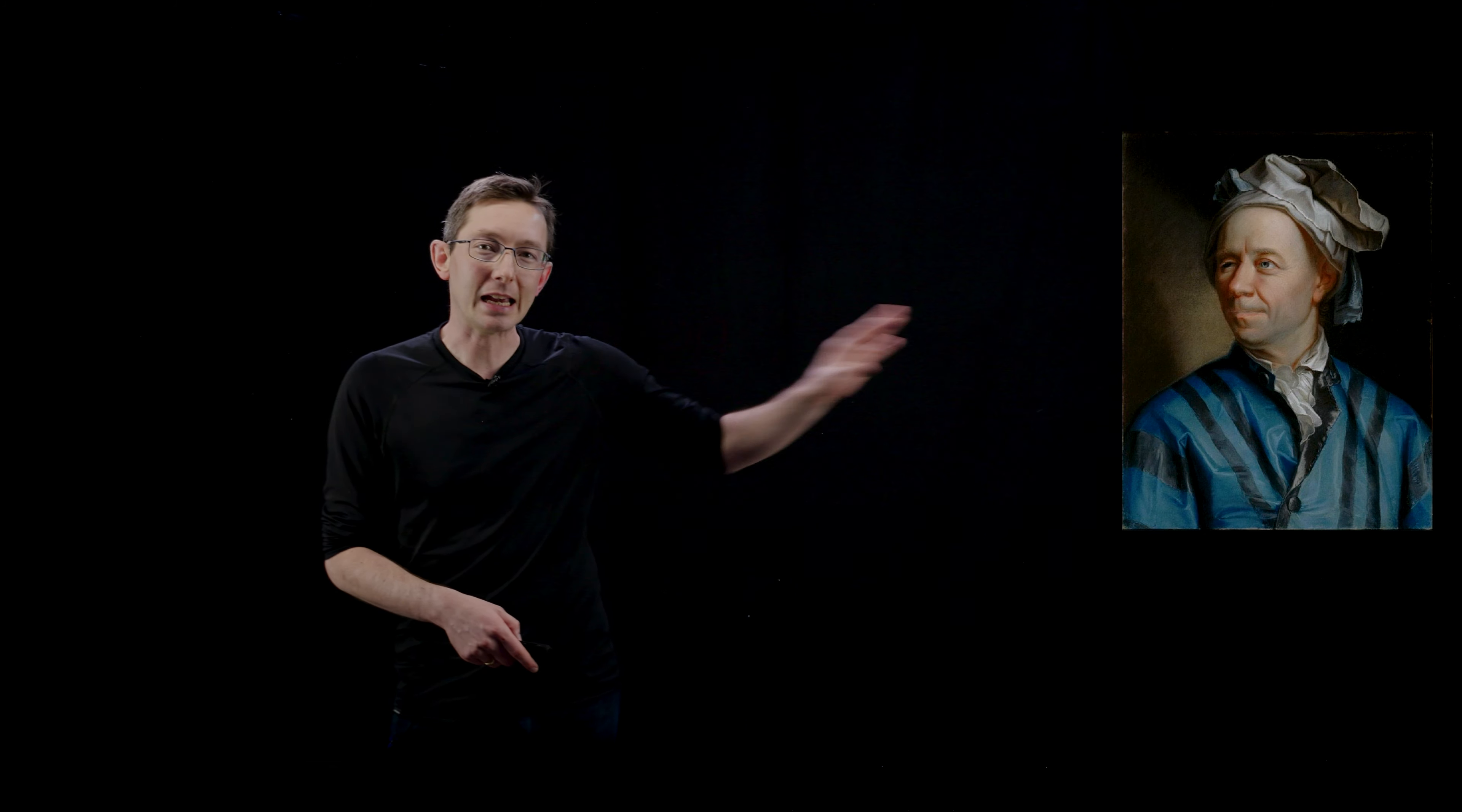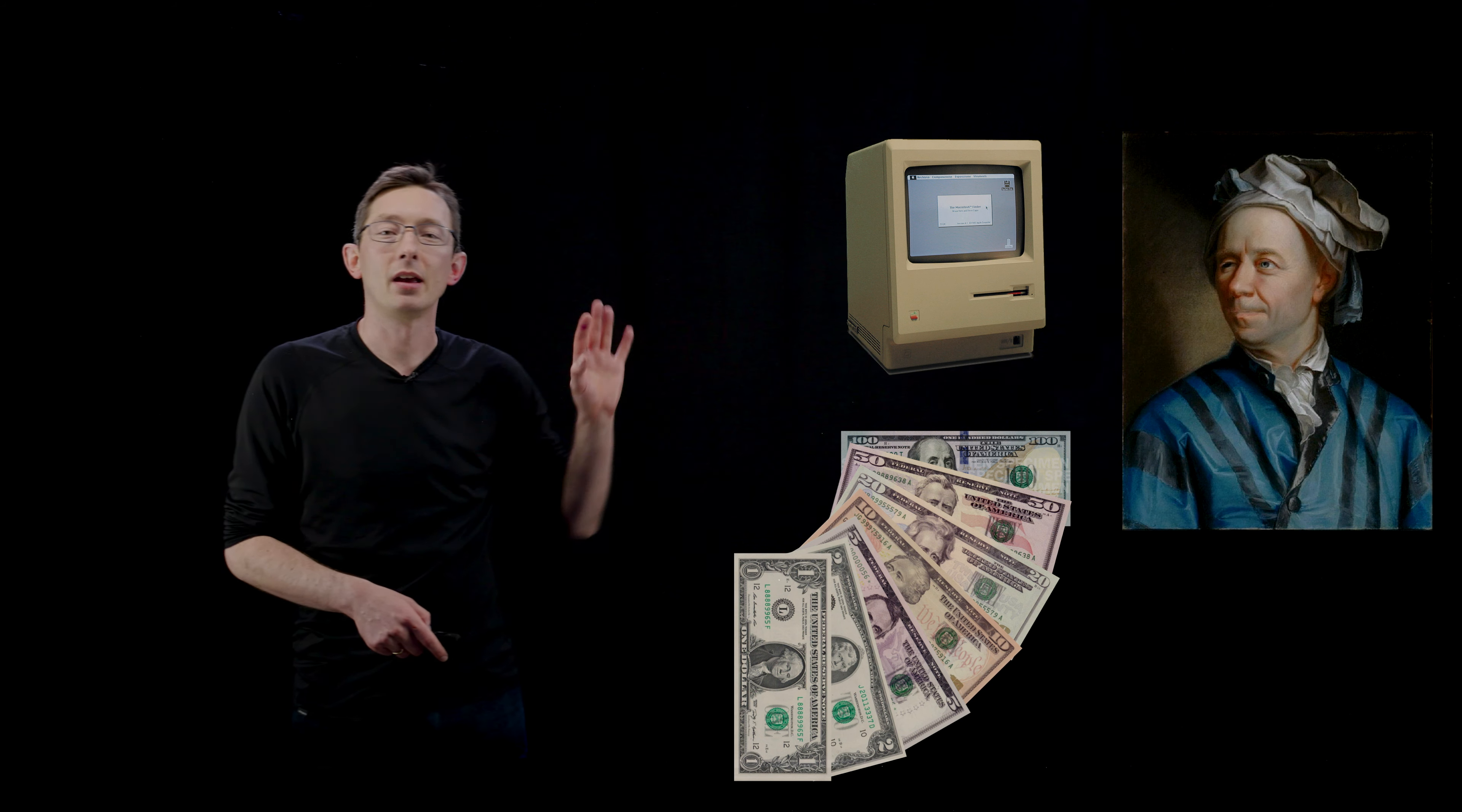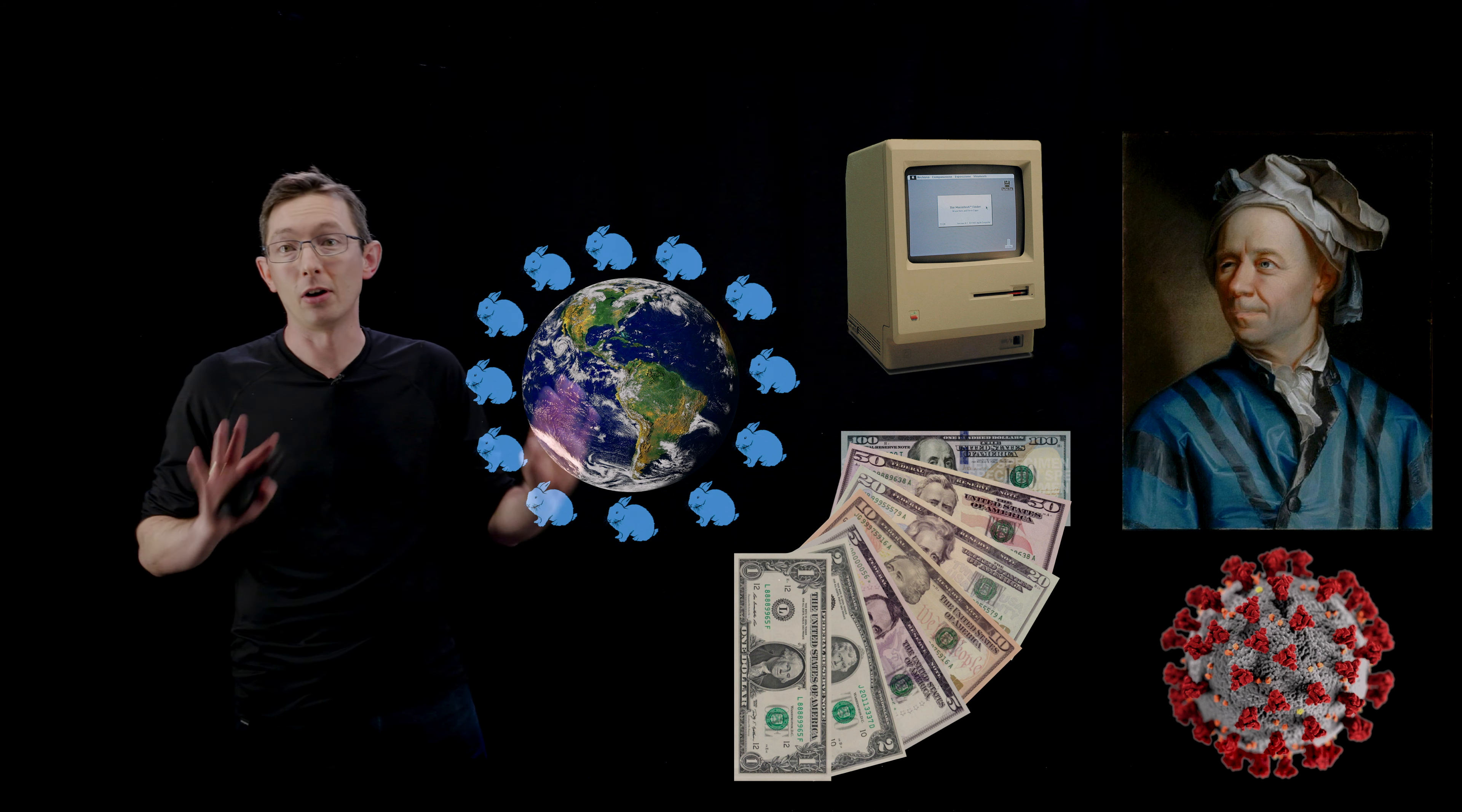Hi everyone. So I've been wanting to make this video for a long time and I've been thinking about it a lot lately. I want to talk about what a famous 18th century mathematician, the personal computer, the US economy, the spread of disease, and the bunny population on Earth all have in common.